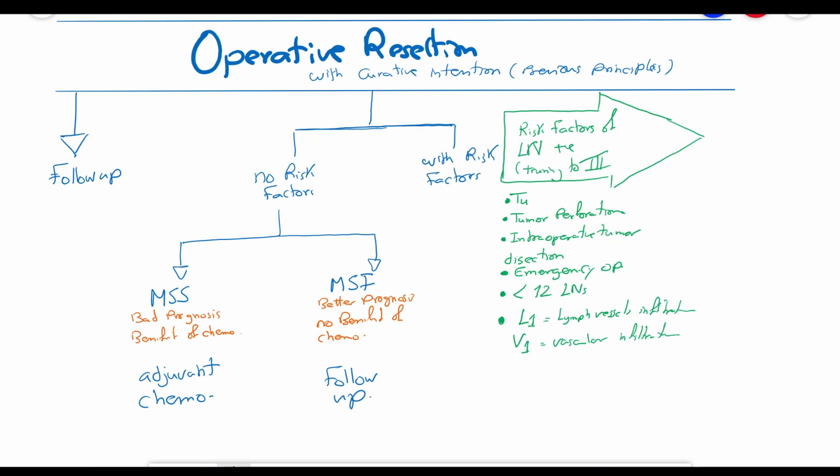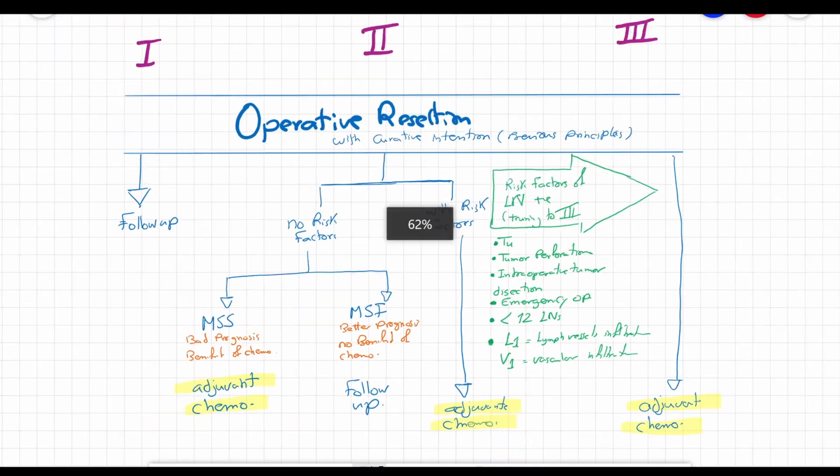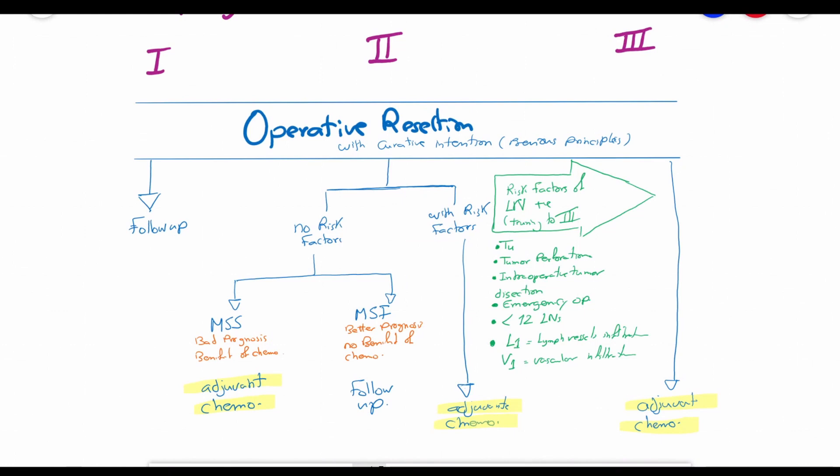The presence of risk factors, which means a potential stage 3 or an evident stage 3 by positive nodal stage, both require postoperative chemotherapy. In a nutshell, adjuvant chemotherapy is required in stage 3, stage 2 with risk factors of becoming stage 3, or microsatellite stable tumors of stage 2 without risk factors.